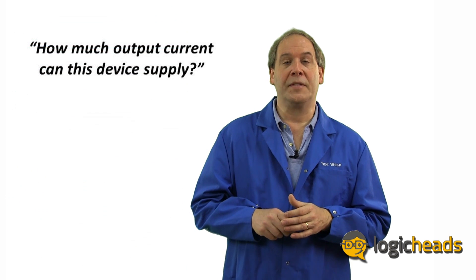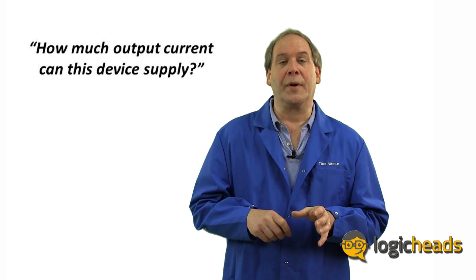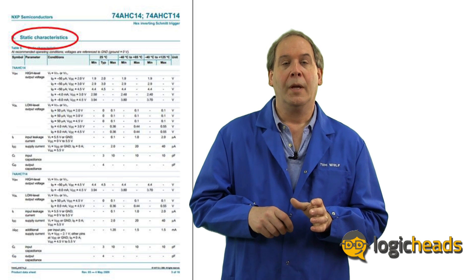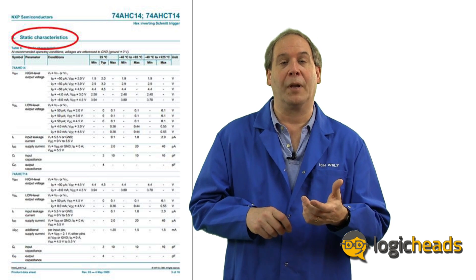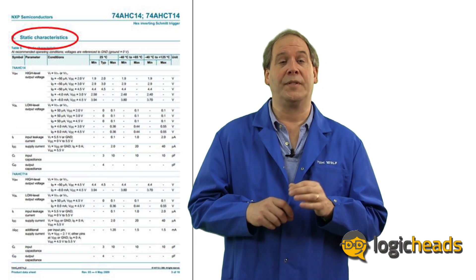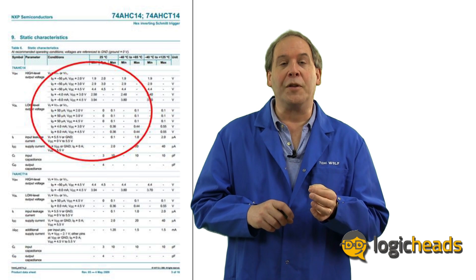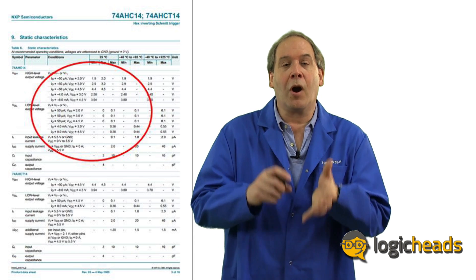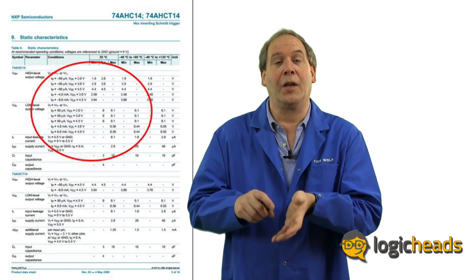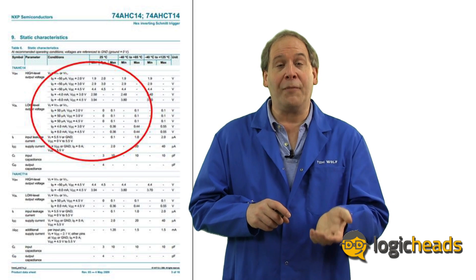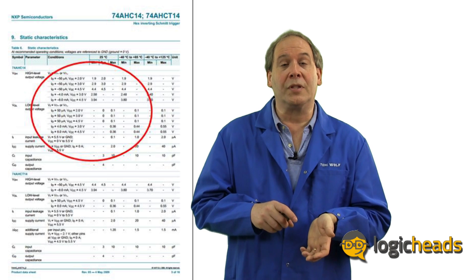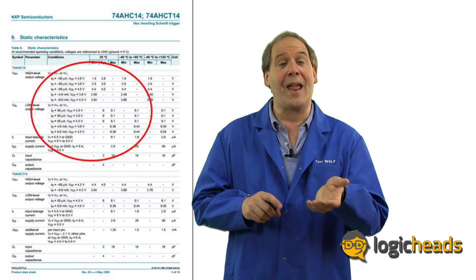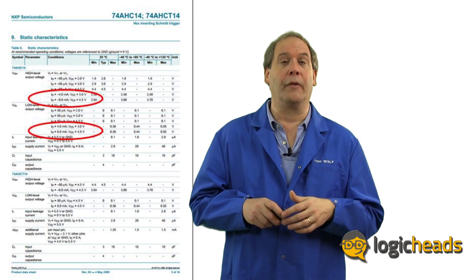How much output current can this part supply? The static characteristics are the voltage and currents that the device can operate at if you hold the inputs or outputs in one state. Now this is different than the dynamic values, which are listed below, which indicate how fast the device can change from one state to another. The static values tell you the drive capabilities of the device. As the current drawn from an output pin increases, it gets harder and harder for the device to reach the proper high and low signal levels. So depending on the supply voltage of the device, this chart gives you the voltage levels that you will see at the pins based on how much current you draw from it. Notice that the highest current listed is about 8 milliamps, which is generally the maximum drive current for the AHC family.